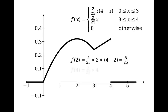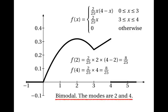We also work out f(4) = (2/25) · 4 = 8/25. Since both values are equal, this is another bimodal distribution where the modes are 2 and 4.